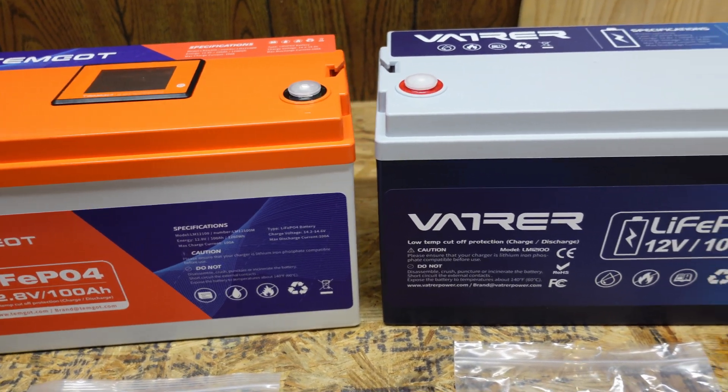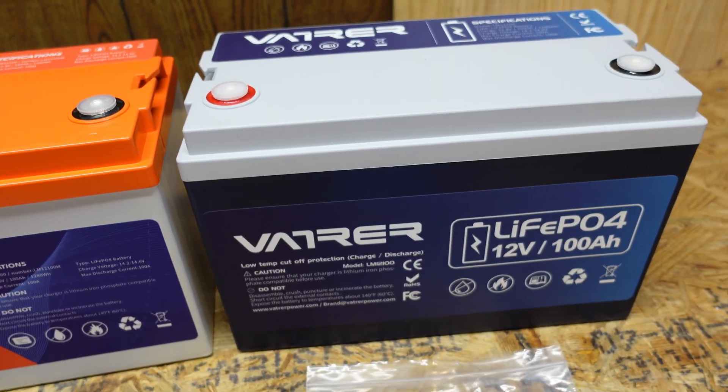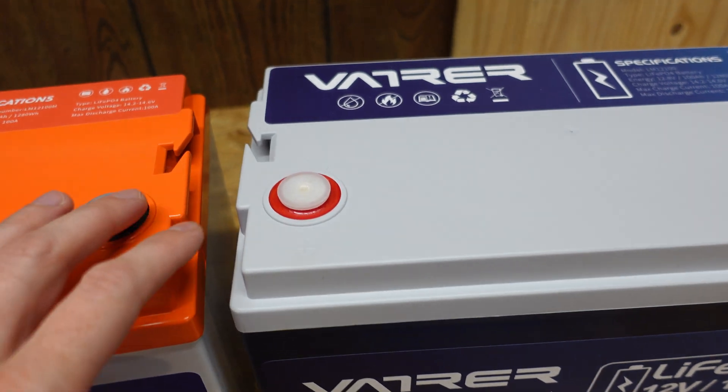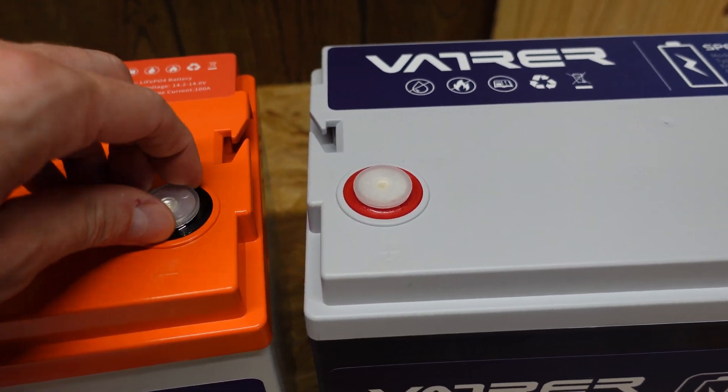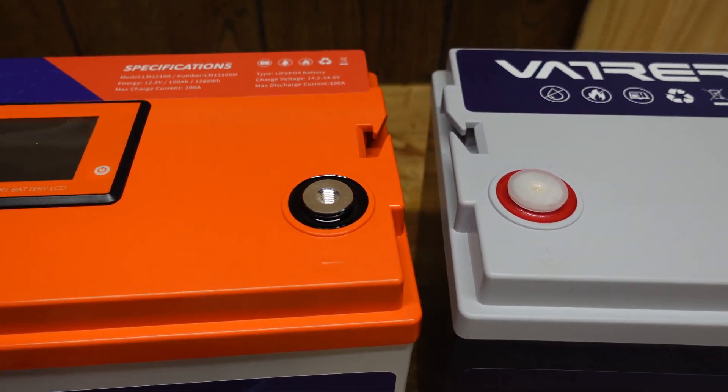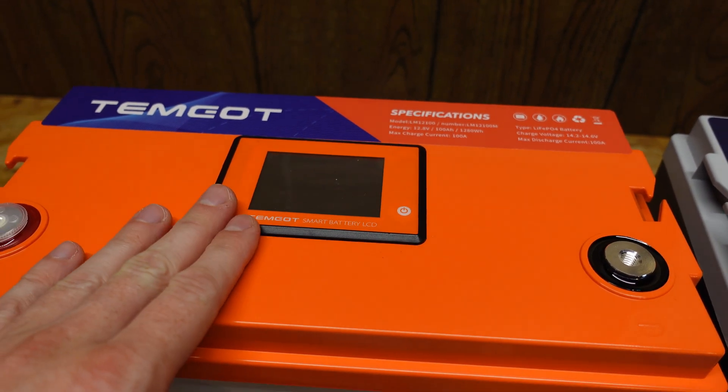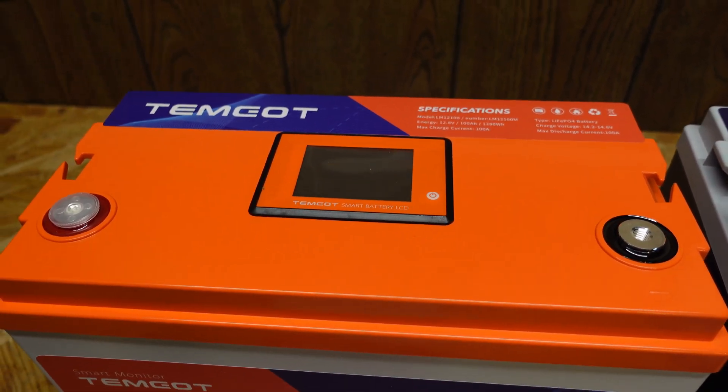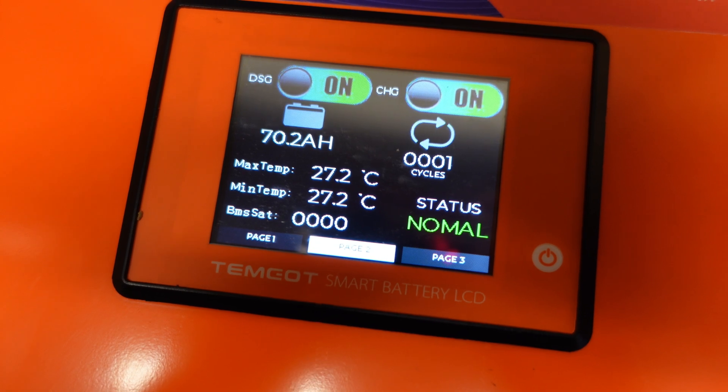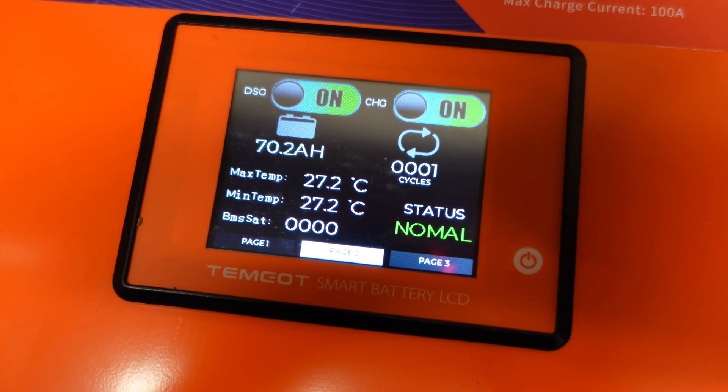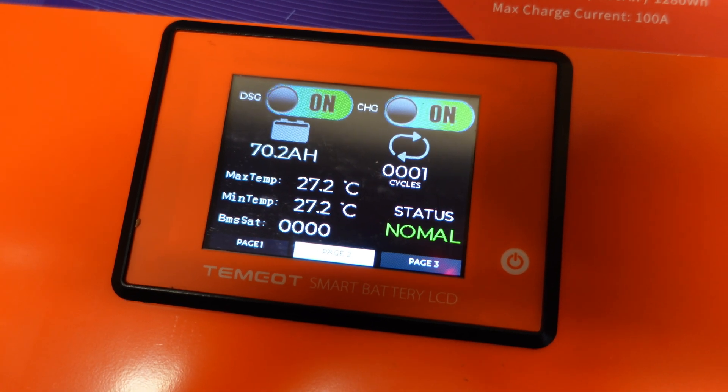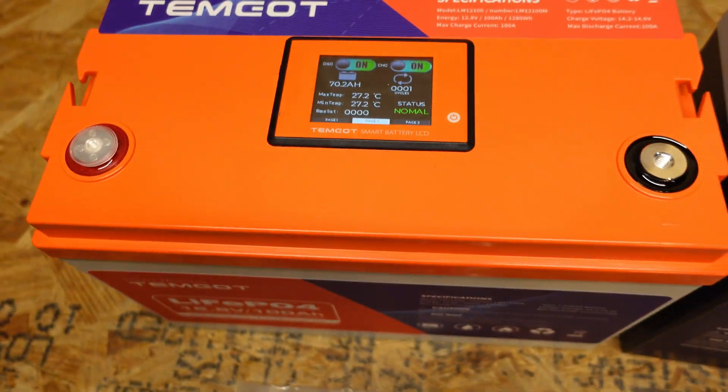These batteries are both built in plastic cases that look near the same. We've got the same terminals and terminal covers. The only visible difference is that this one has a display so you can check the status of your battery. It's reading 70.2 amp hours so it's approximately at a 70% state of charge.